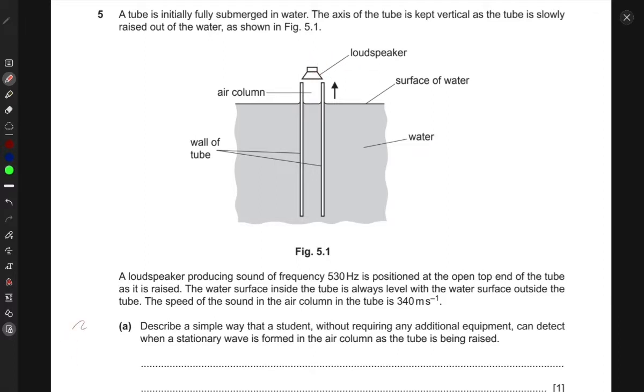We have a loudspeaker producing a sound of frequency 530 Hertz, positioned at the top open end of the tube. As it is raised, the water surface inside the tube is always level with the water surface outside the tube. The speed of sound in the air column is also given, so we have the frequency and the speed of that sound.